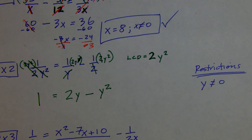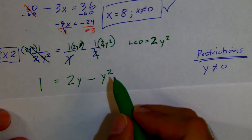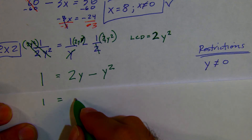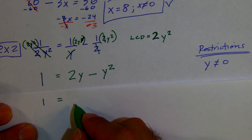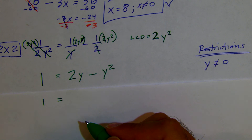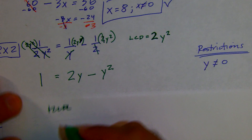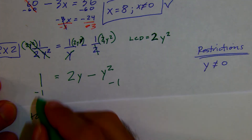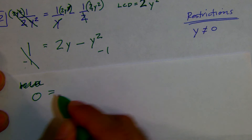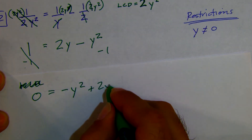We still have this y squared on one side, which makes it a little trickier. Let's go ahead and rearrange. I'm going to subtract 1 from both sides, so I end up with 0 on one side. Let's put it in the order we know how to deal with: 0 equals 2y minus 1 — wait, let me arrange it properly as a trinomial.